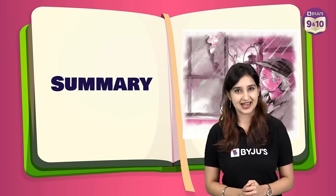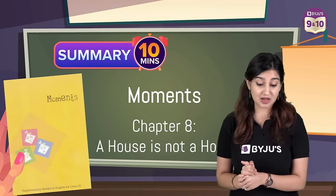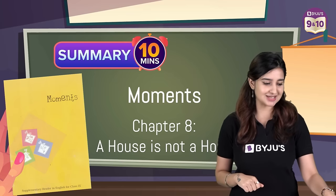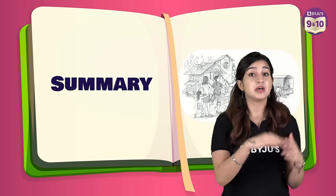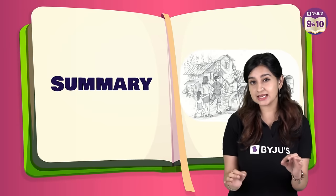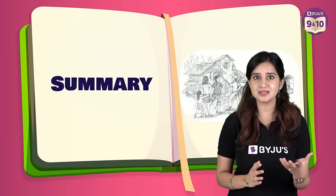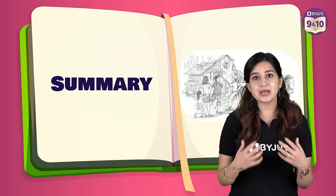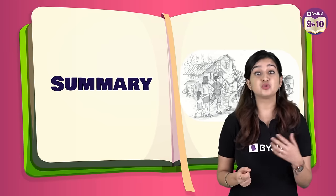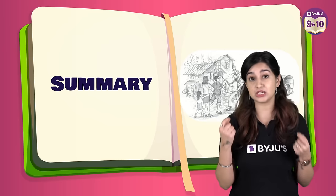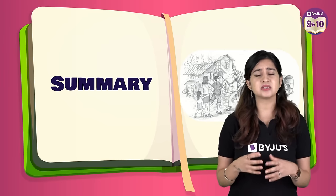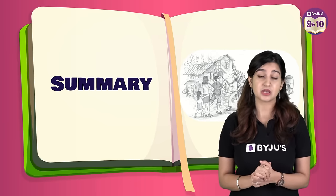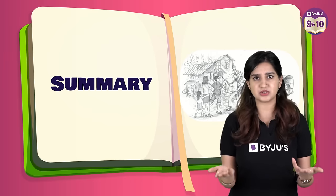That brings us to the end of the summary. Today we are going over Chapter 8 from Moments, which is A House is Not a Home. A House is Not a Home highlights the thin difference between a house and a home. It's based on the author Zan Gordioso's life. She mentioned the challenges that she faced being a teenager when she switched schools and grew up in a completely new environment. The narrator discussed a real incident from her life that had a great impact on her as a teenager. She joined a new school and found it difficult to adjust to the new environment, feeling lonely and isolated. She missed her teachers and friends from her old school, and her teachers told her to participate in extracurricular activities and make new friends.